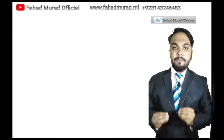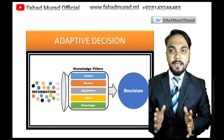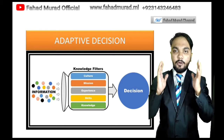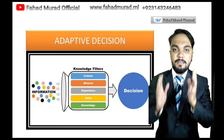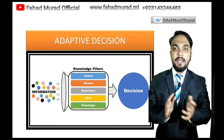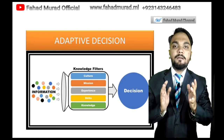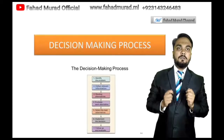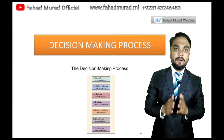What is adaptive decision making? In adaptive decision making, we gather information through a filter, and then we set our final decision. This is our adaptive decision making.